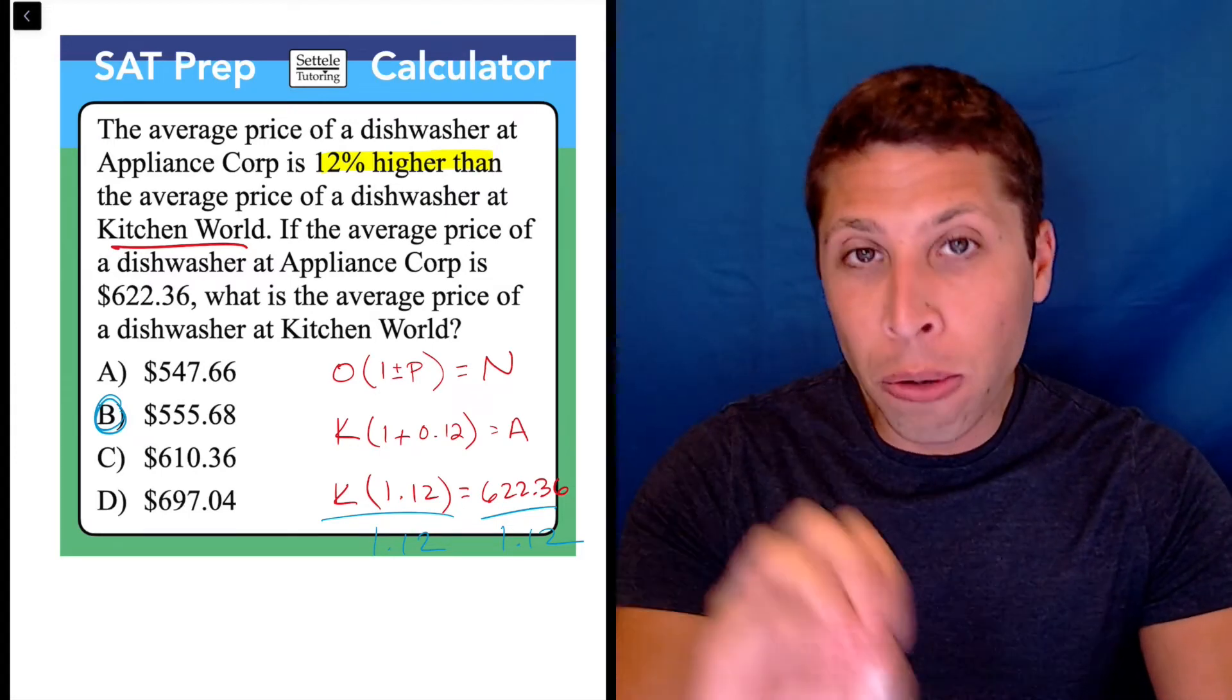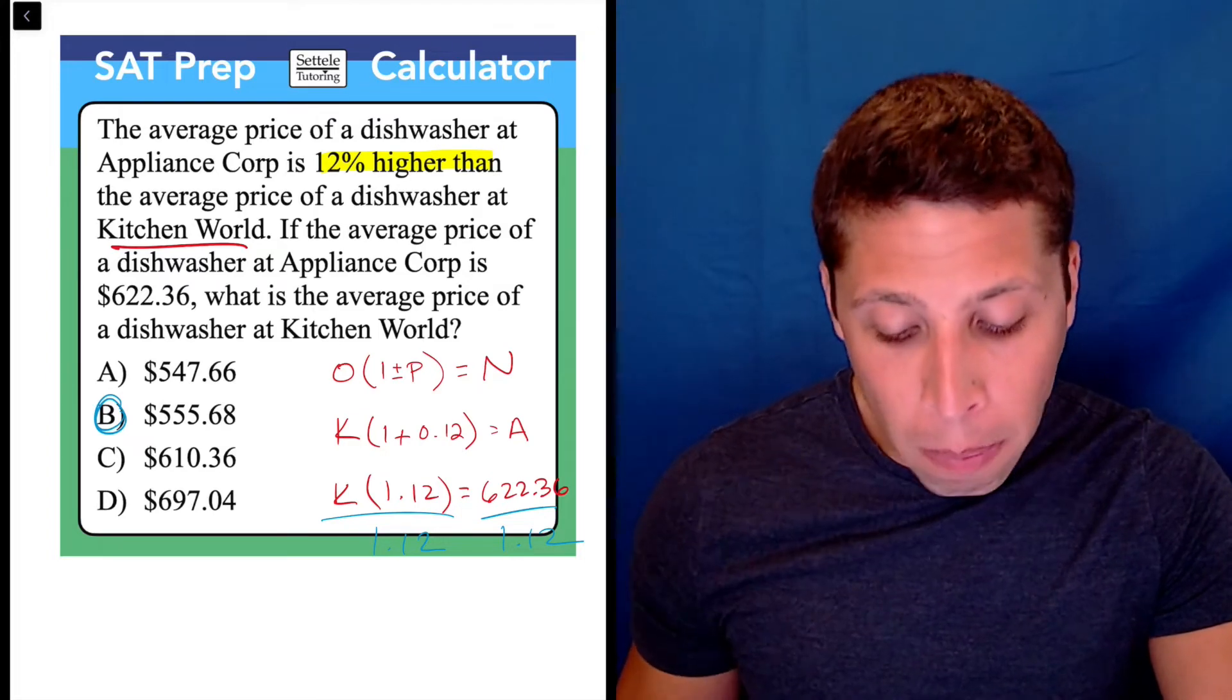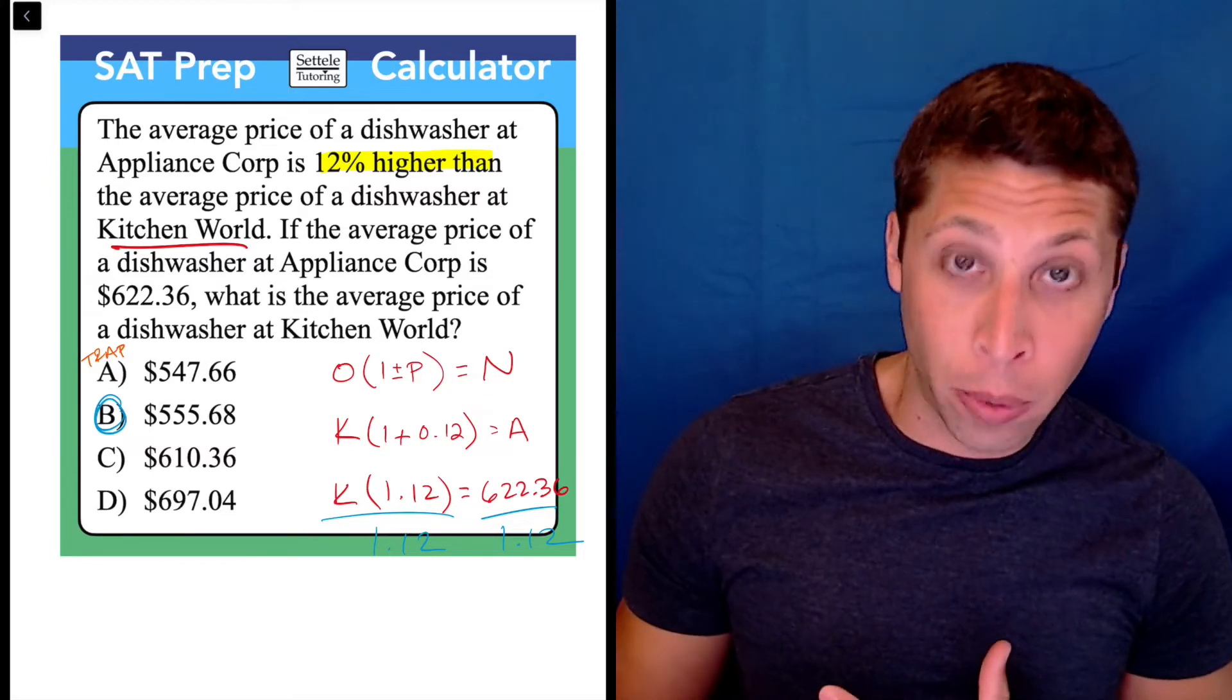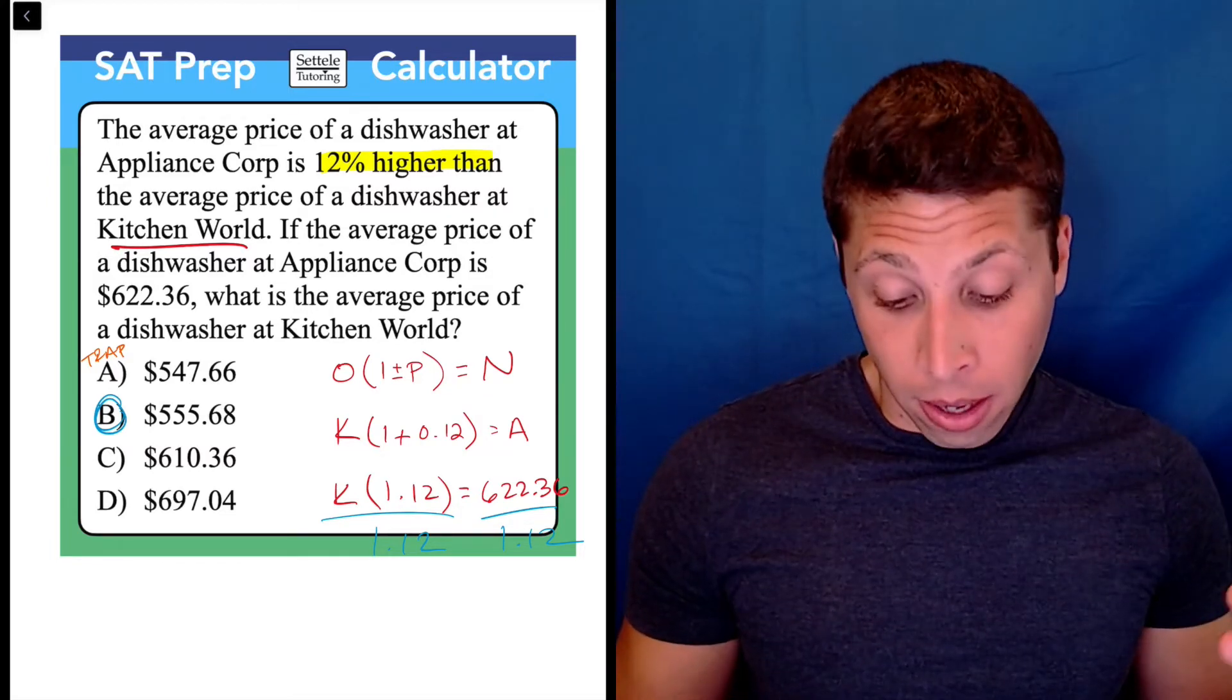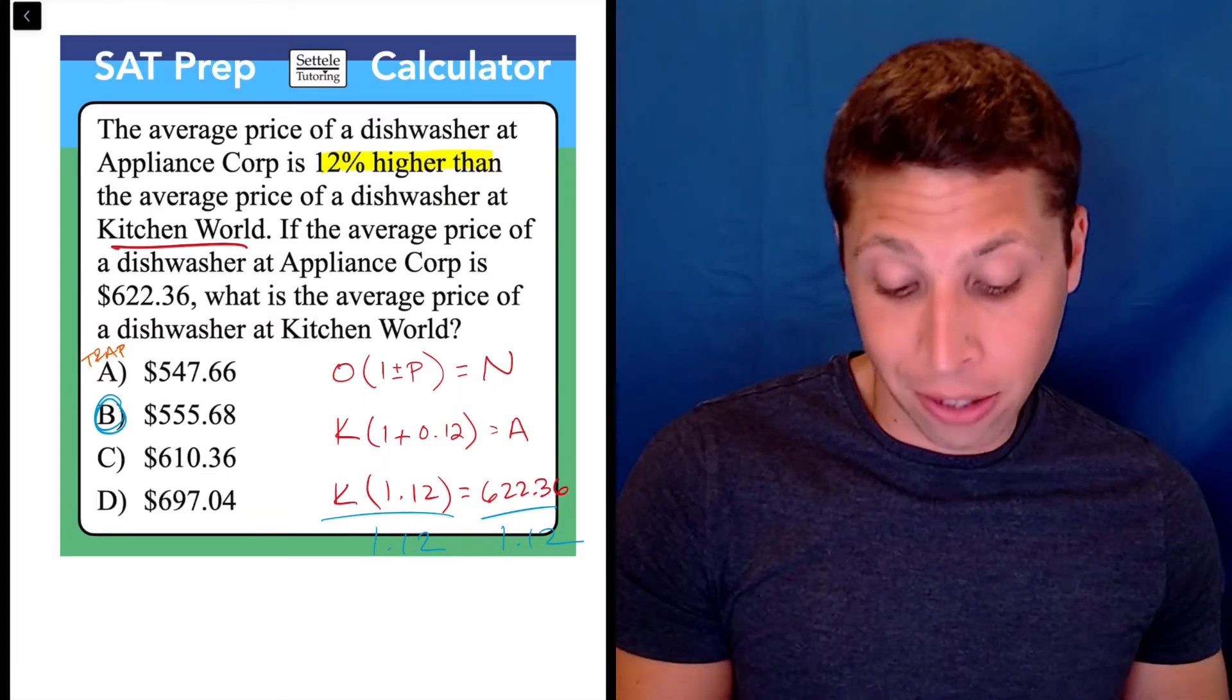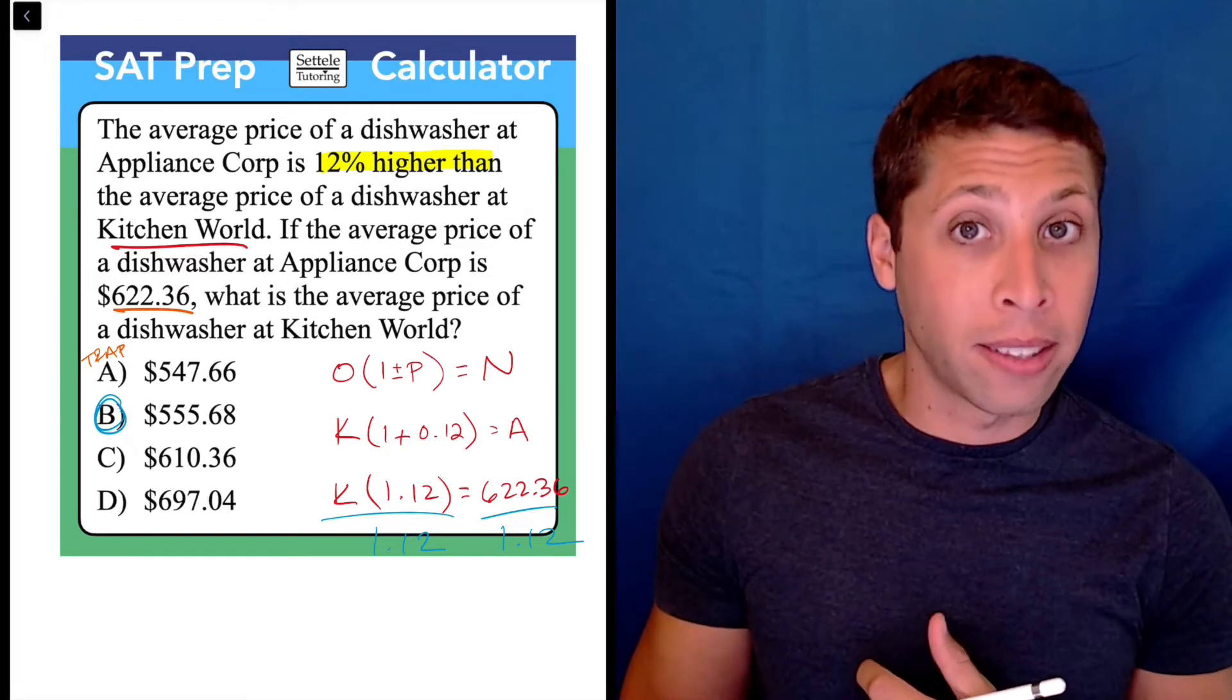If you didn't use the formula and you just kind of winged it with logic, you're probably going to fall for the trap of choice A. Because what a lot of people do here is they think, well, if I have 12% more at Appliance Corp, I can just take 12% of the 622 and then subtract it out.